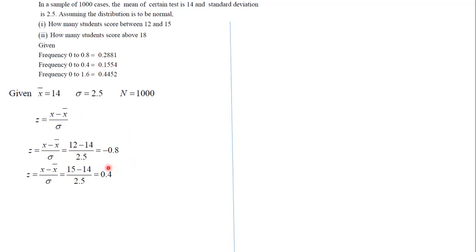So let us calculate the probability of this between 12 and 15, which means probability for -0.8 and 0.4. The probability of score between 12 and 15 means probability of score between these two frequencies.